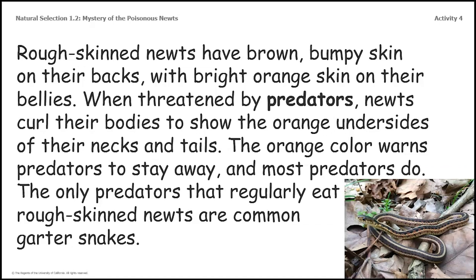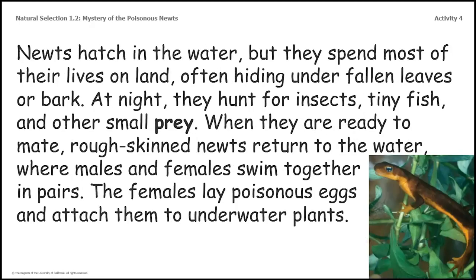Rough-skinned newts have brown bumpy skin on their backs with bright orange skin on their bellies. When threatened by predators, newts curl their bodies to show the orange undersides of their necks and tails. The orange color warns predators to stay away, and most predators do. The only predators that regularly eat rough-skinned newts are common garter snakes. Newts hatch in the water but spend most of their lives on land, often hiding under fallen leaves or bark. At night they hunt for insects, tiny fish, and other small prey. When ready to mate, rough-skinned newts return to the water, where males and females swim together in pairs. The females lay poisonous eggs and attach them to underwater plants.